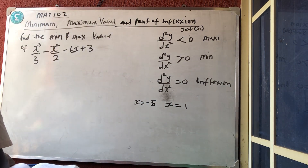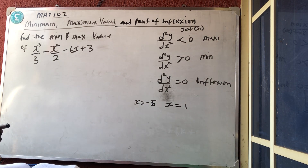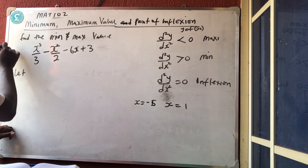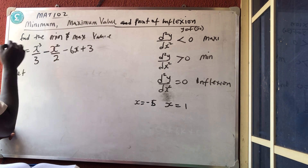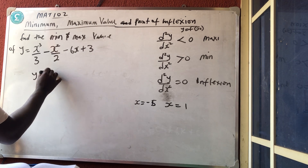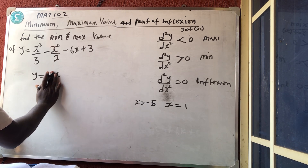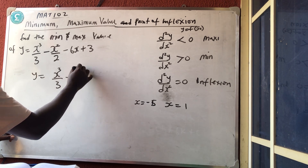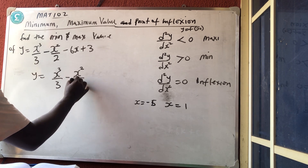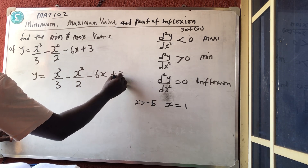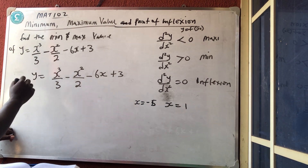So let's do this. Find the minimum and maximum point of this equation. We can say y is equal to x³ over 3 minus x² over 2 minus 6x plus 3. Now let us do this.